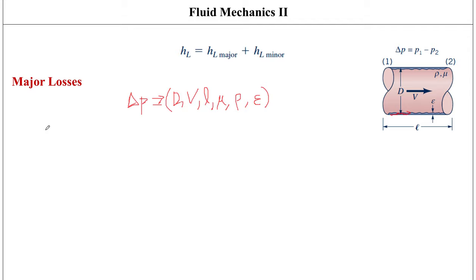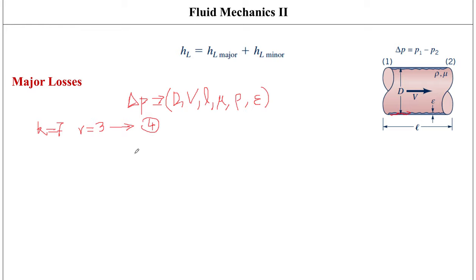If pressure drop is a function of these variables, the total number of variables K equals seven. The number of reference dimensions R equals three (using the FLT or MLT system). Therefore K minus R equals four, meaning we need four dimensionless products or dimensionless groups to fully describe the pipe flow.